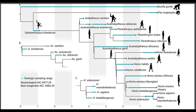Problematically, since Australopithecus is directly ancestral to our own genus, that makes it a paraphyletic taxon. Some Australopiths, like Australopithecus sediba, are more closely related to Homo than to other Australopiths. Some researchers have even argued that sediba should itself be classed within Homo. Further, Australopithecus is ancestral to two other genera: Paranthropus and Kinyanthropus.